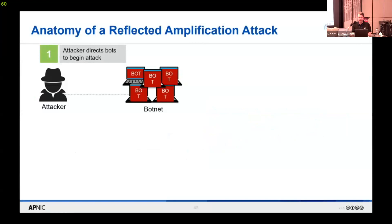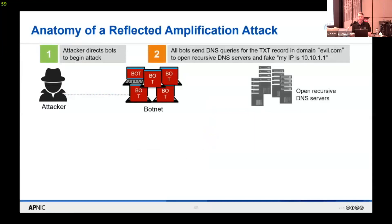The same as before, the attacker has a botnet and instructs it to perform an attack. The main difference here is the use of a server in the middle that is usually not configured properly or has a vulnerability. These are servers that use the UDP protocol because UDP is connectionless — no TCP three-way handshake required. The bots are sending a DNS query to DNS servers, but they spoof their source address. The from address is set to be the victim, and they also request a TXT record that is very large in size.